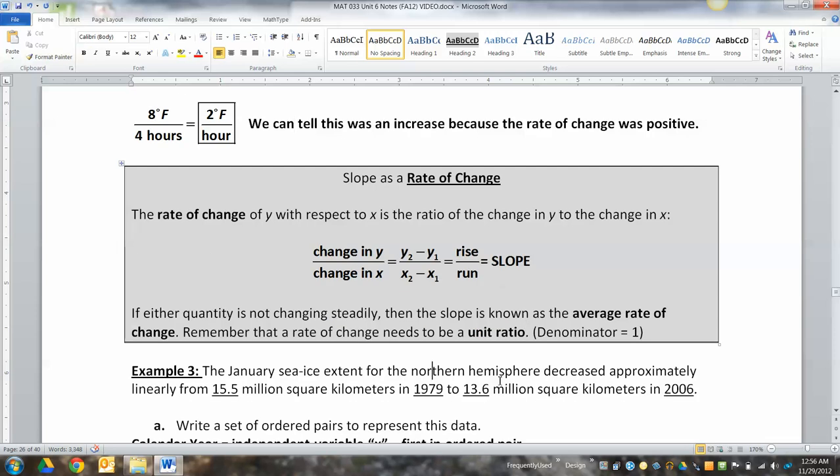Okay. All right. So let's look at this problem. The January sea ice extent for the Northern Hemisphere decreased approximately linearly from 15.5 million square kilometers in 1979 to 13.6 million square kilometers in 2006. Now I went in here and I underlined kind of the key points, you know, as good math students, we kind of want to read these problems and pick apart the points of information we're really going to need. And the numbers we're definitely going to need. We're going to need 15.5 million square kilometers. We're going to need the 1979 that goes with it. And then 13.6 million square kilometers and the year that goes with that.